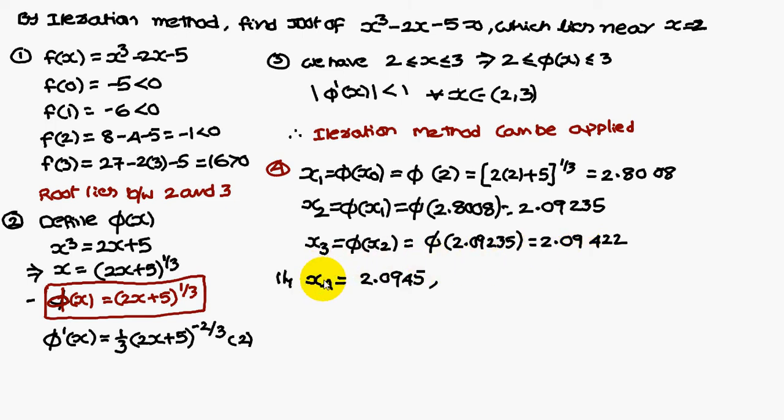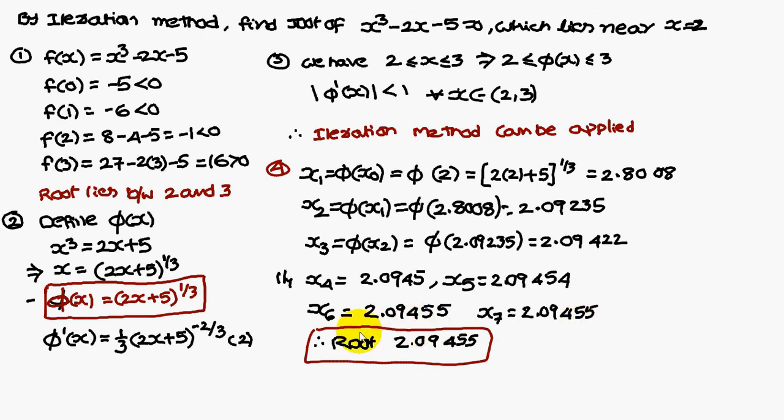Similarly, x₄ is 2.0945, and x₅ is 2.0945. Therefore, x₆ is 2.09425, x₇ is 2.09425. Therefore, the approximate root is 2.094255.